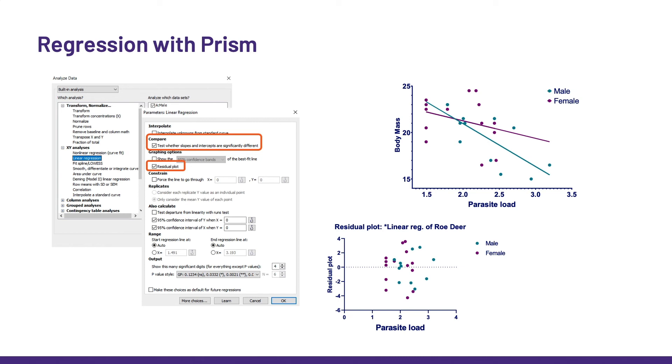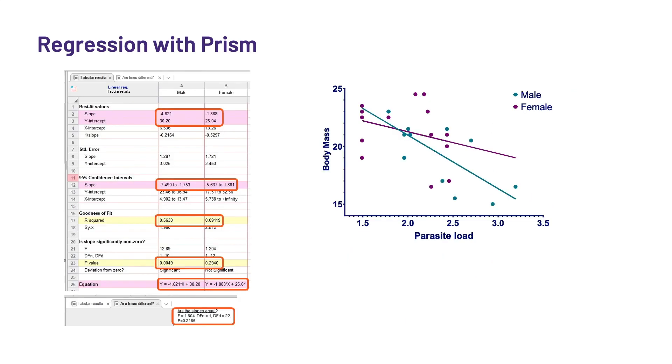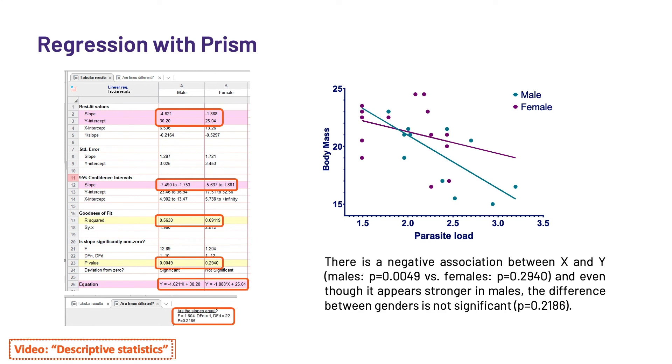Okay, so first, we have the best fit values, which are used to build the equation. We can see that the coefficient values are consistent with the graph. The slope is steeper for the males than for the females. We then have some measures of confidence for these values, like the standard error, the confidence interval, which is really informative. Like here, if zero is not between the limits, it means that zero is not a possible value for the slope, and it follows that we can expect significance for the males. You can find some more information about confidence intervals in the video on descriptive statistics.